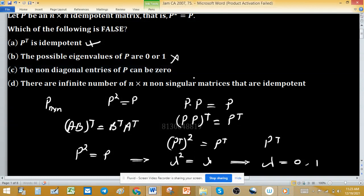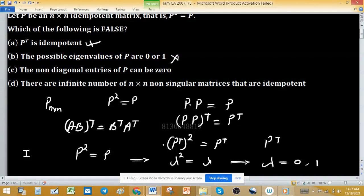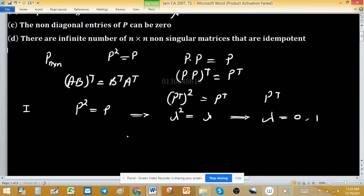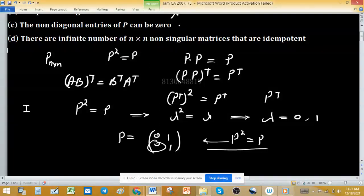The non-diagonal entries of P can be zero. Identity matrix can be considered as idempotent matrix and we know that non-diagonal elements can be 0. So this statement is true. Or you can consider a non-identity matrix as P = [[0,1],[1,0]]. This matrix is idempotent because P square equals to P. This condition is satisfied and you can observe easily non-diagonal elements are 0. So this statement is again true, not desired.